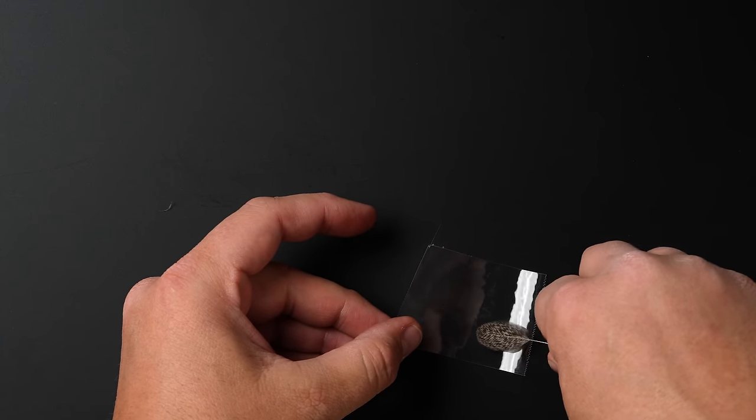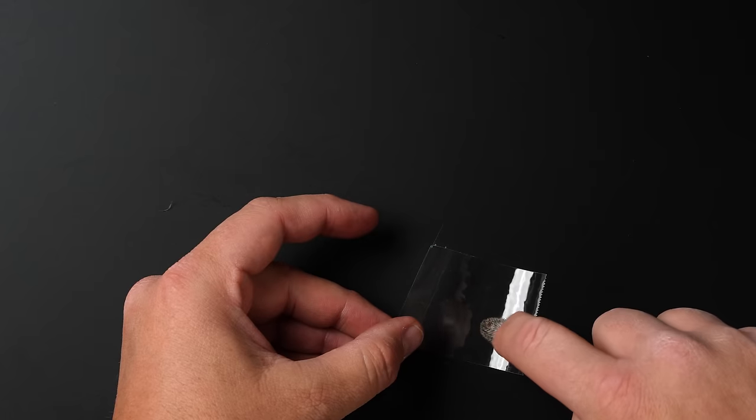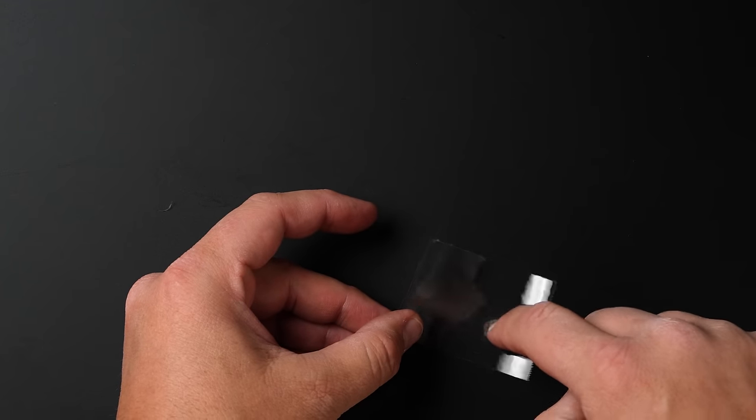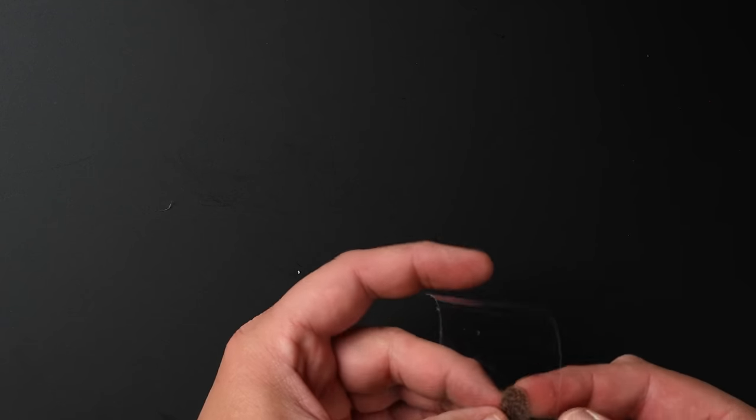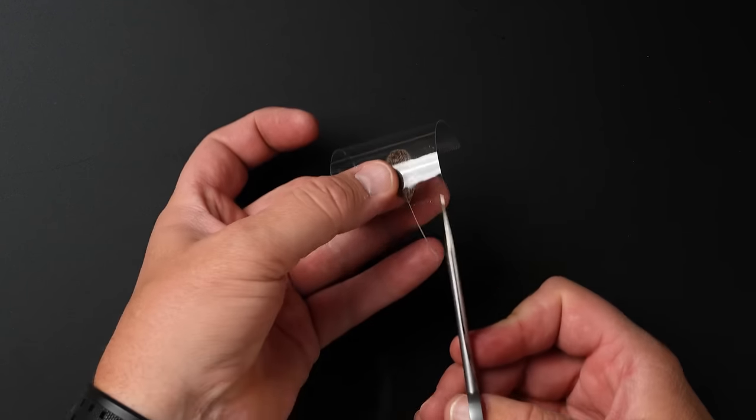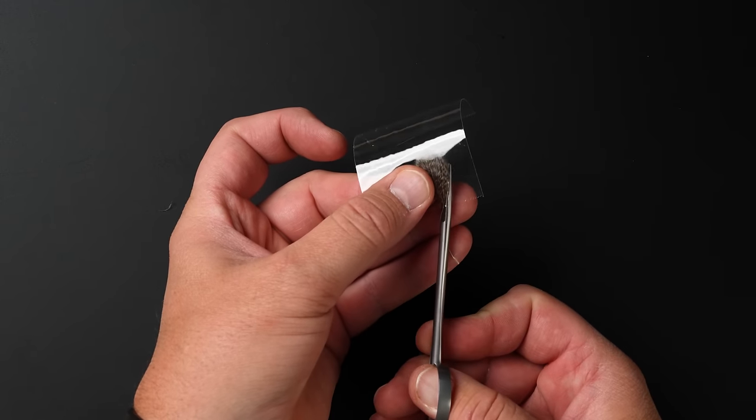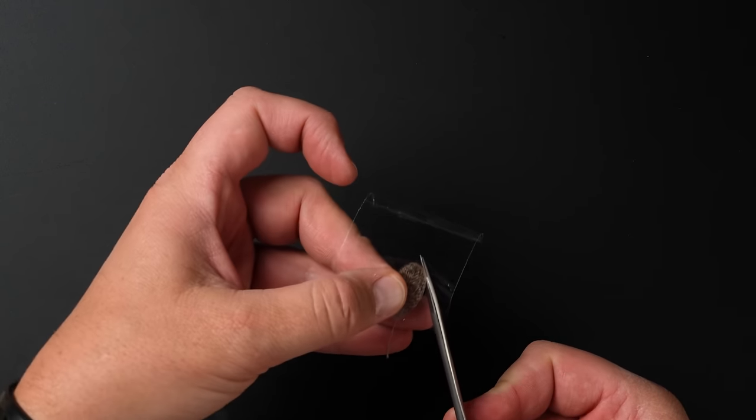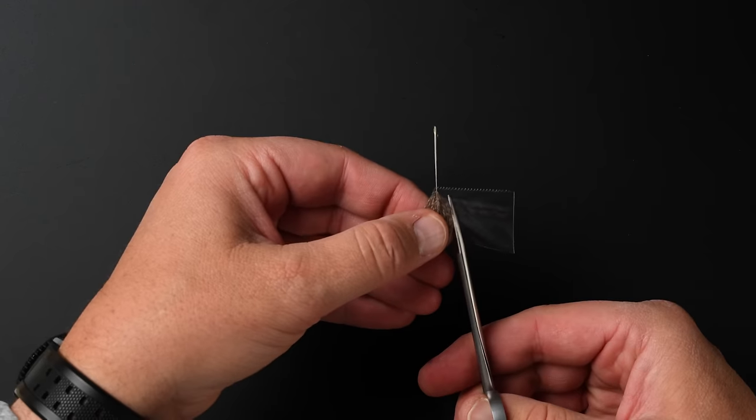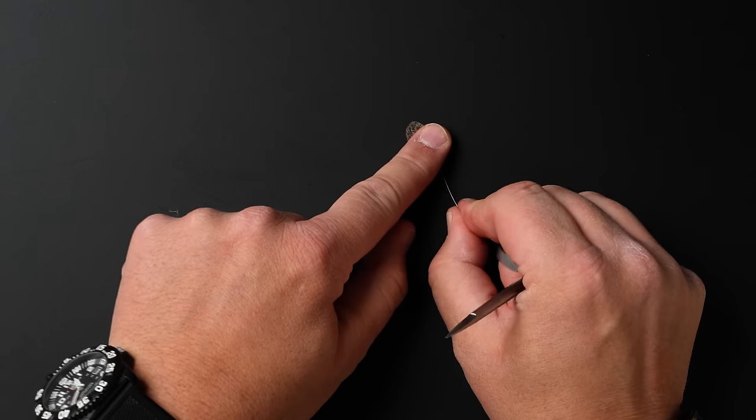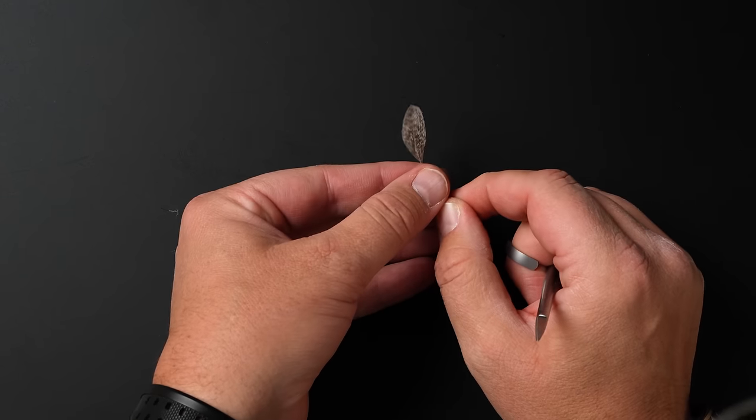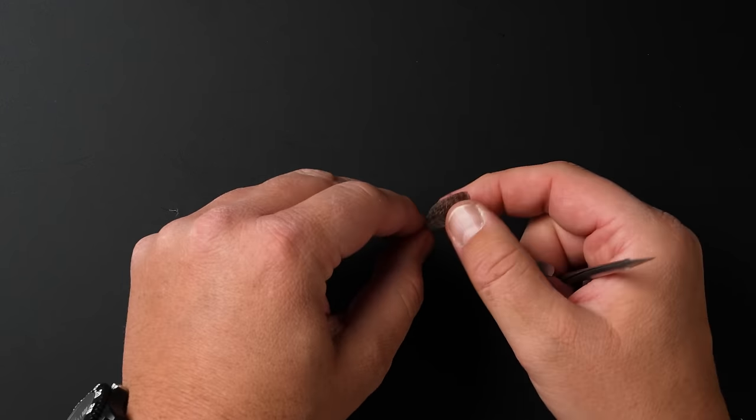And I'm just going to place that either shiny or dull side down, however you want it. And just kind of tap that in there. And now it's pretty well glued in there. From here, I'll just cut that feather out. The dull side I'll show you because it will show a little bit better in the camera, but we have a super durable feather now.